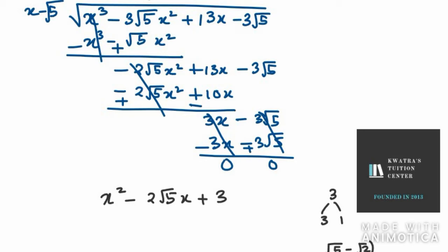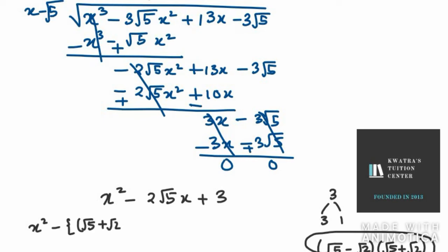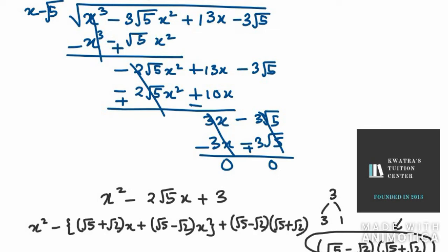We can write 3 as (√5 minus √2)(√5 plus √2), since a² minus b² gives us √5 squared minus √2 squared equals 5 minus 2 equals 3. We use these two factors to split the middle term: x² minus (√5 plus √2)x plus (√5 minus √2)x, and 3 is replaced by (√5 minus √2)(√5 plus √2).